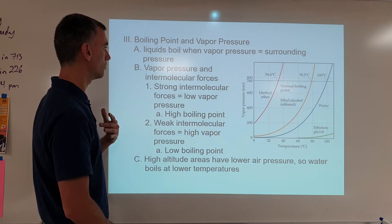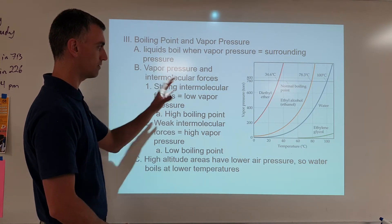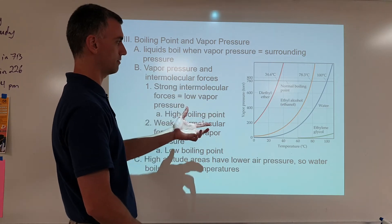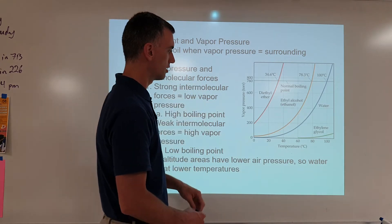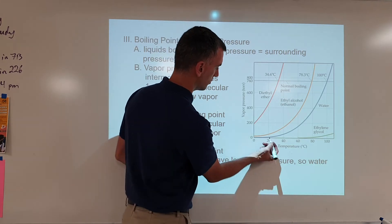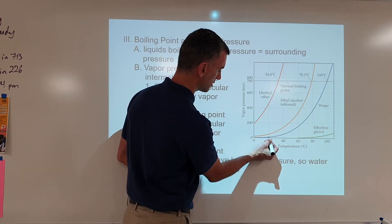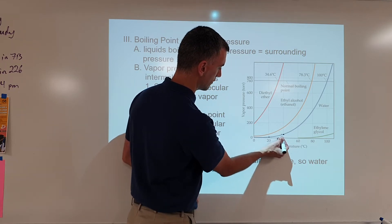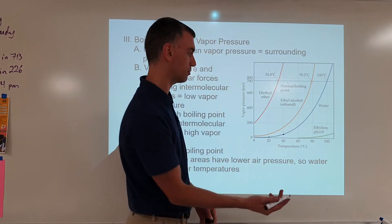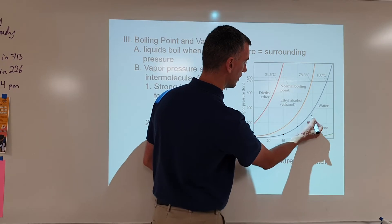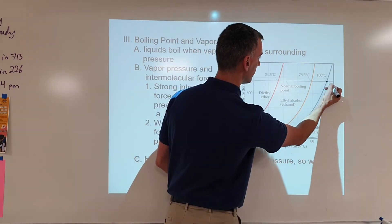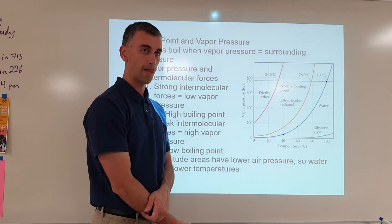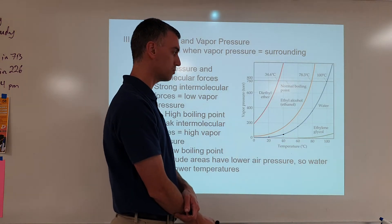What we need to understand is what this graph shows about vapor pressure itself. Notice water at 20 degrees Celsius has a vapor pressure way down low. At 40 degrees Celsius, it's higher. At 60 degrees, it's higher still. At 80 degrees, even higher. At 100 degrees, even higher still. Higher temperature equals higher vapor pressure — raise the temperature and the stuff evaporates more.